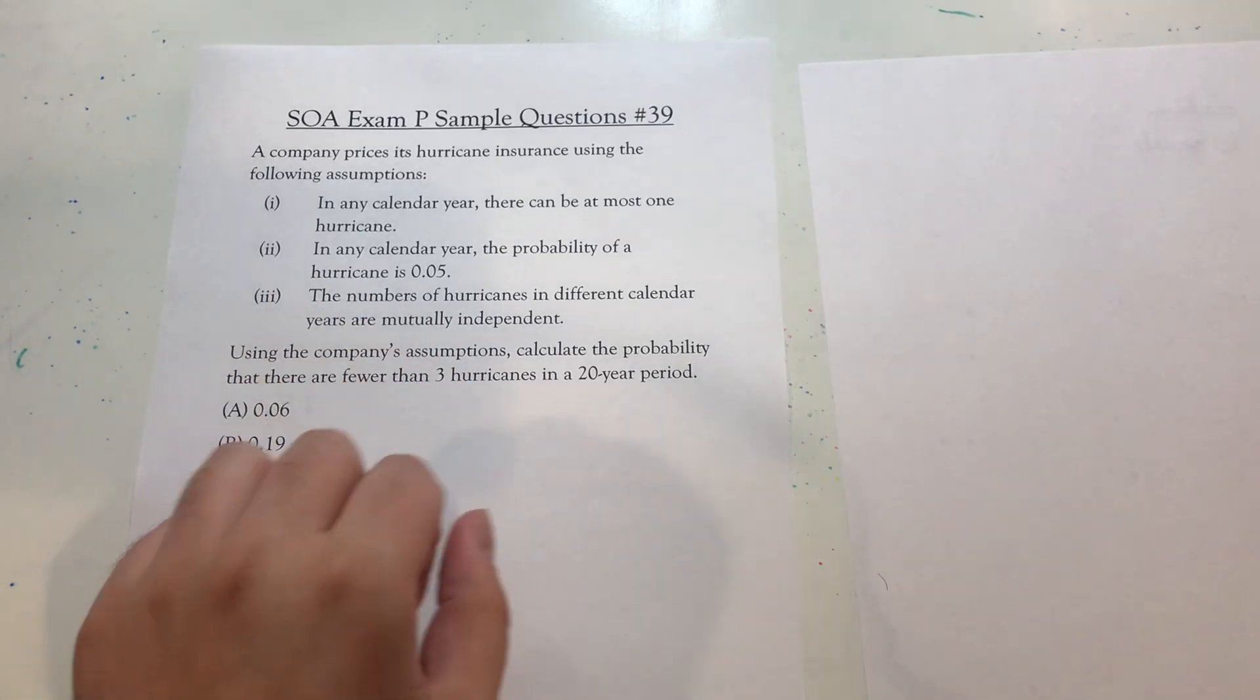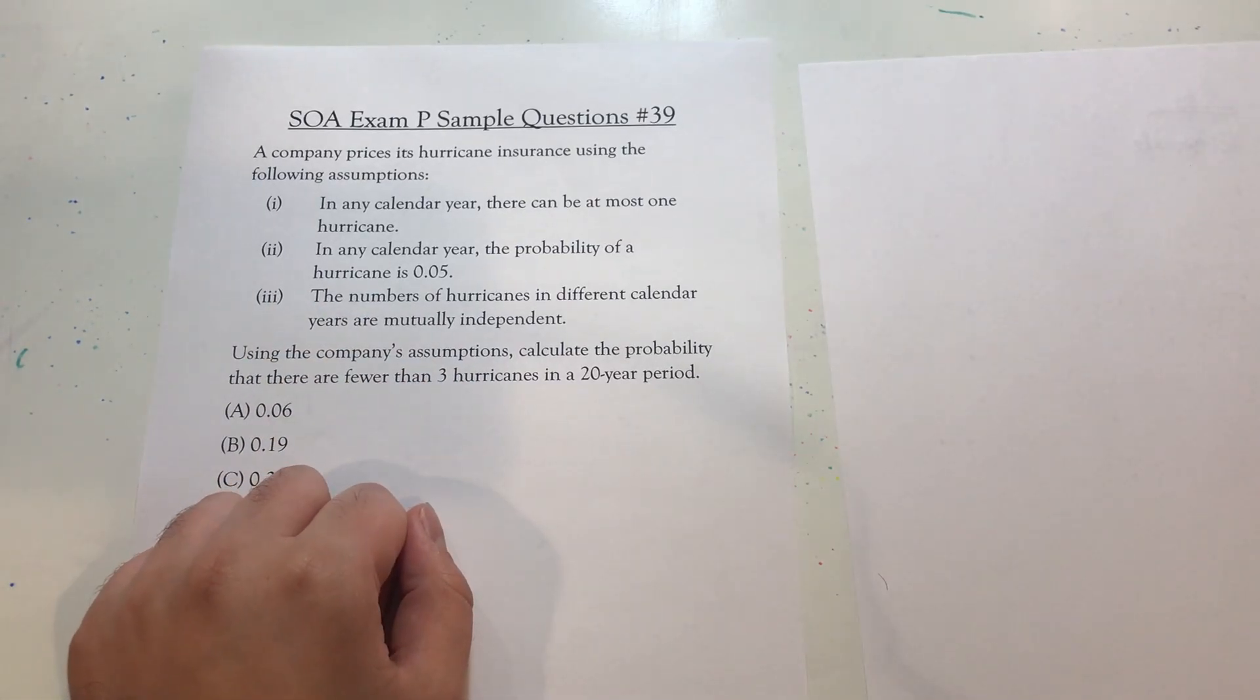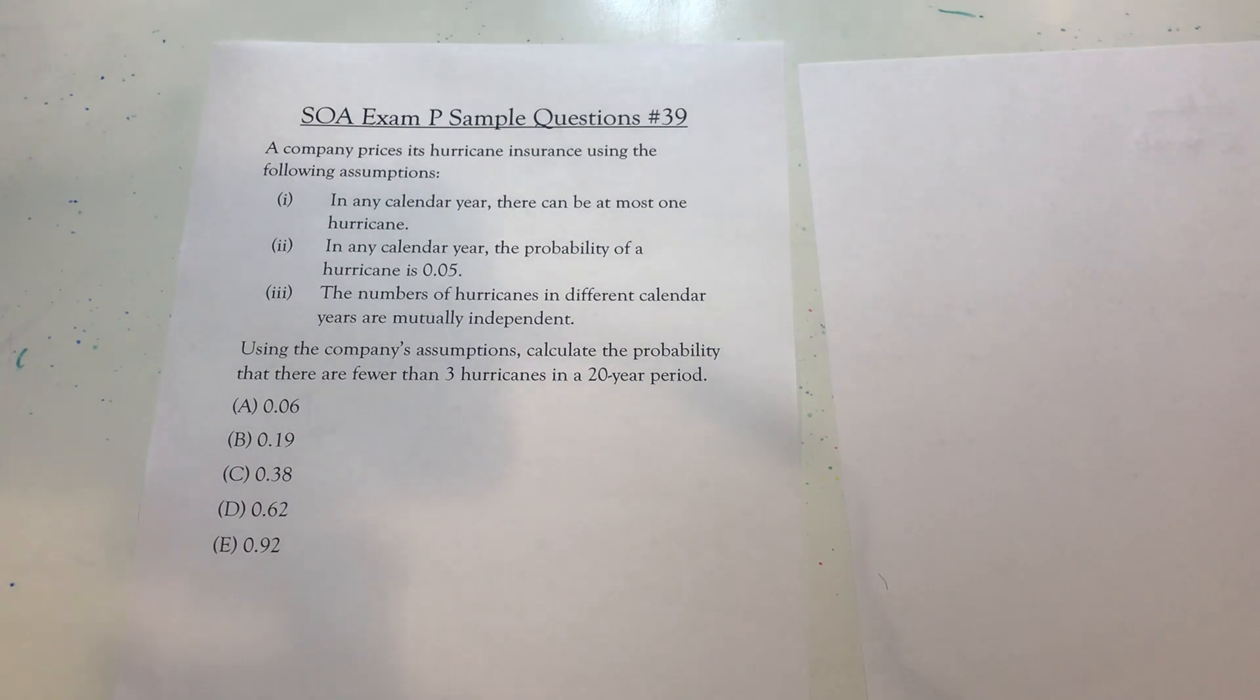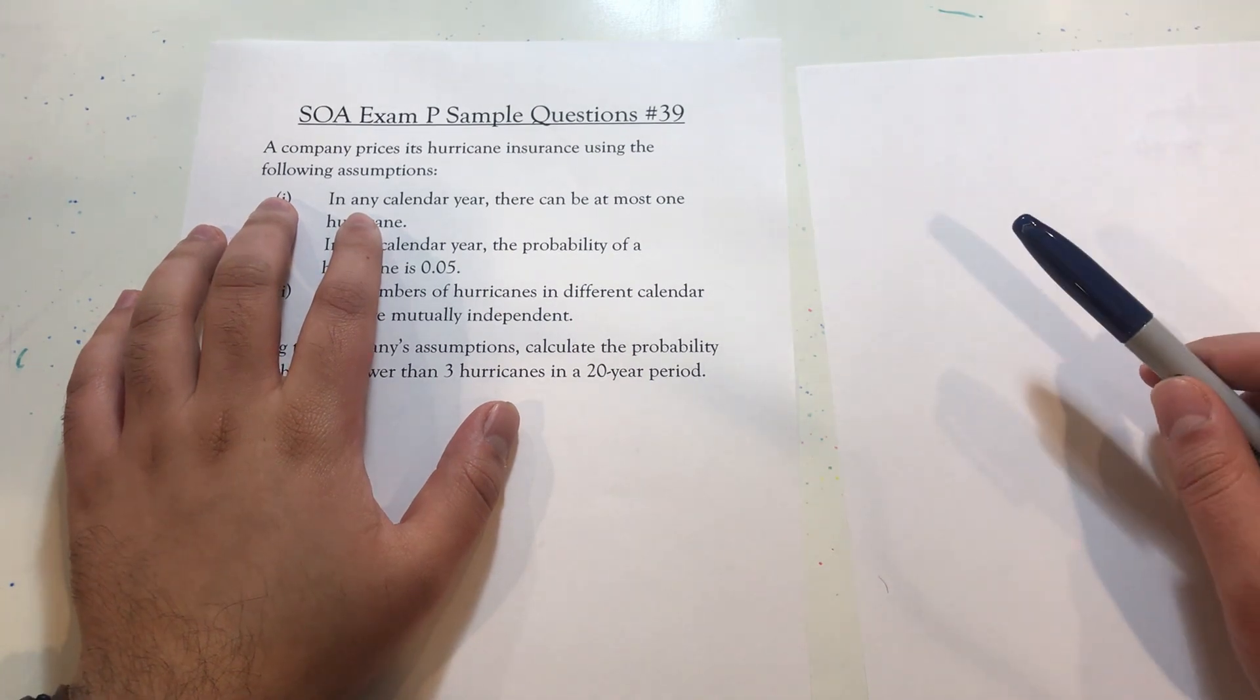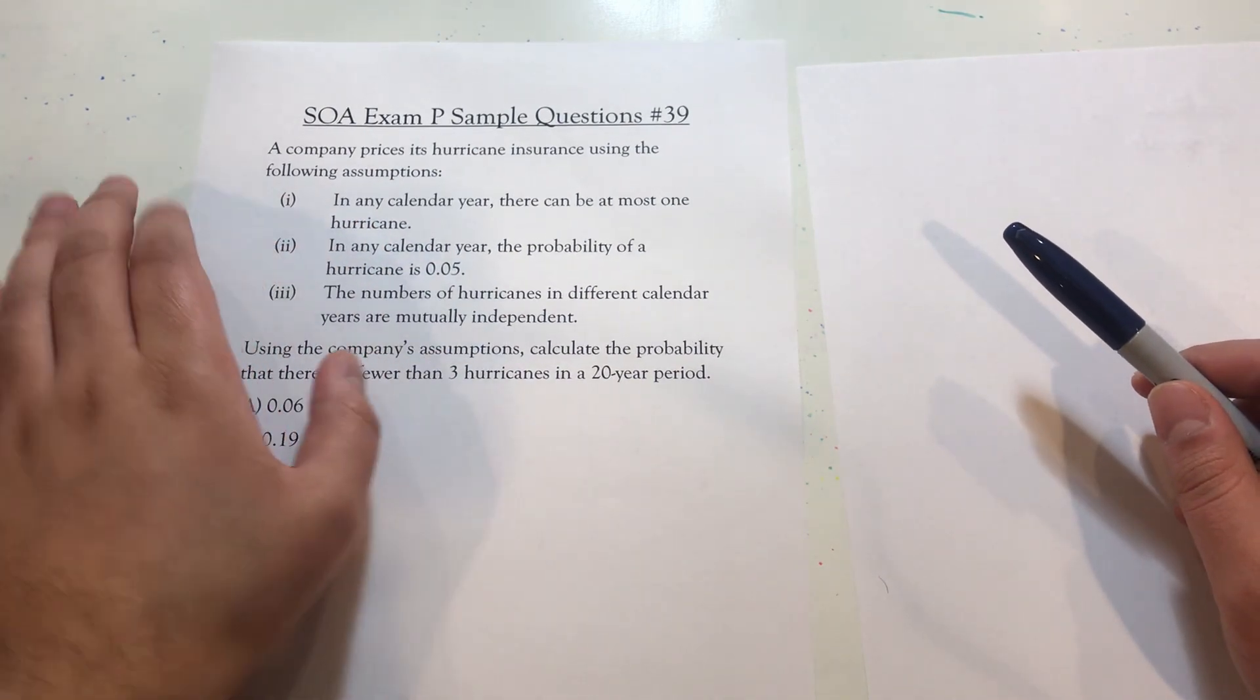All right, so in this video, we're going to go through sample question 39 from the Society of Actuaries Exam P list of sample questions. The question reads: